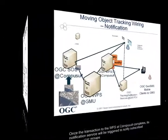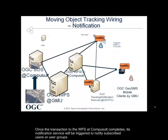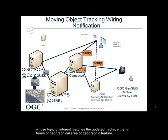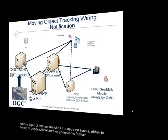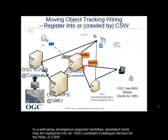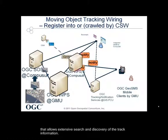Once the transaction to the WFS at CompuSor completes, its notification service will be triggered to notify the subscribed users or user groups whose topic of interest matches the updated tracks, either in terms of geographic area or geographic feature. In a well-setup emergency response workflow, persistent tracks may be routed into an OGC-compliant catalog service for the WAM or CSW, that allows extensive search and discovery of the tracking information.